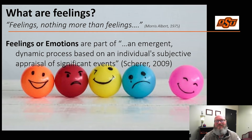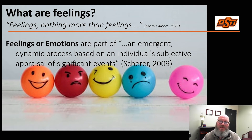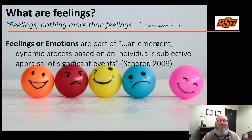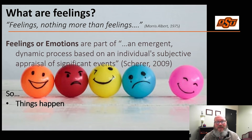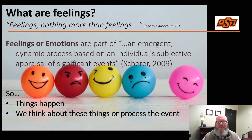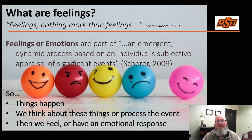In the ABC Model, Dr. Ellis suggests that A, the activating event, is filtered through our beliefs, or the B, which results in C, the consequences or perspective. Dr. Beck borrows from Dr. Ellis' ABC Model and further suggests feelings are a subsequent response to events and thoughts. So generally, we could say that things happen, we think about these things, and then we have an emotional response to these events — all by the time you could snap your fingers.